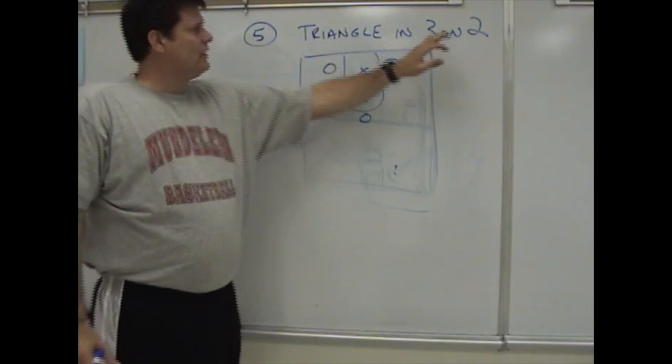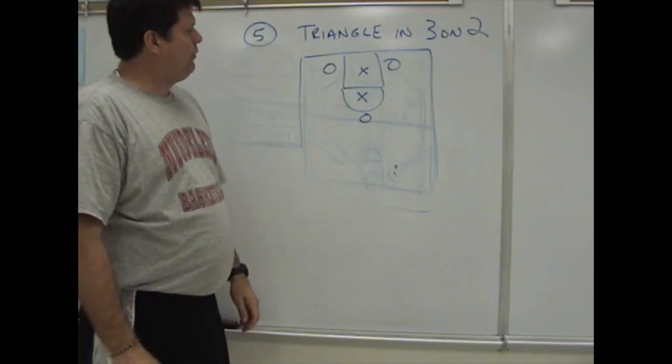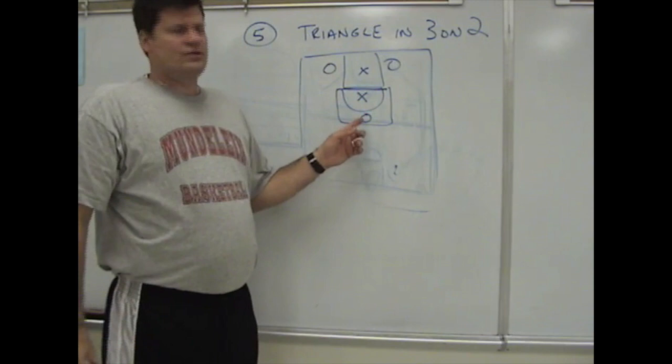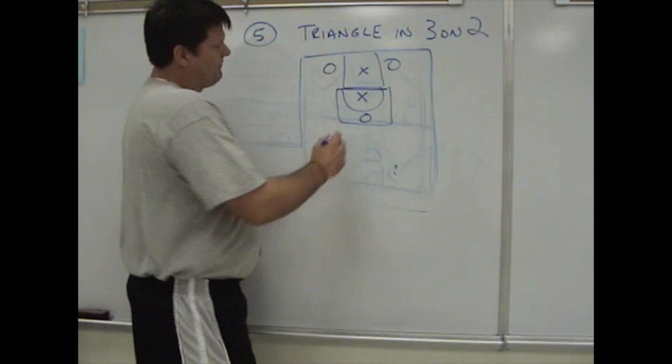This is the fifth item we did on video one — a triangle in a three-on-two situation. Whenever we have a three-on-two situation like we have here, it's very important that the middleman stops at the free throw line area. For our better shooters, we'll step out to the three-point line and stop there, because if they're not guarding us, we'll take that shot.